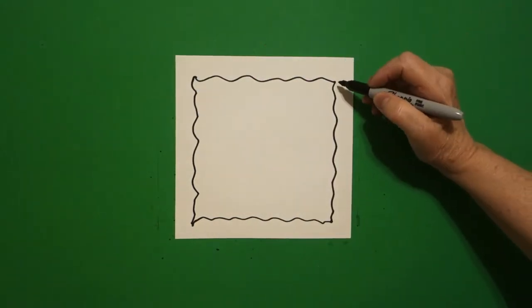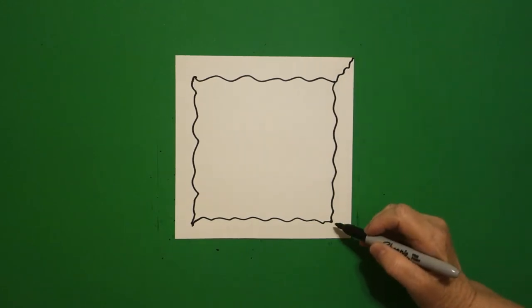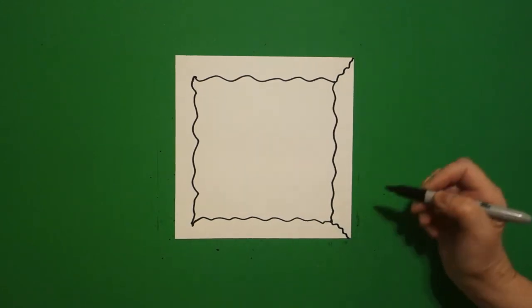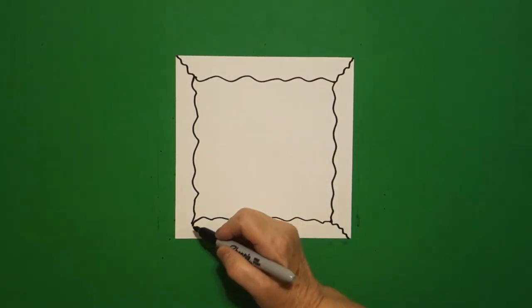Then, at each corner, I'm going to draw another wavy line out, wavy line out, right to that corner, on the left, wavy line out, wavy line out. Basically, what we've done is made a frame.